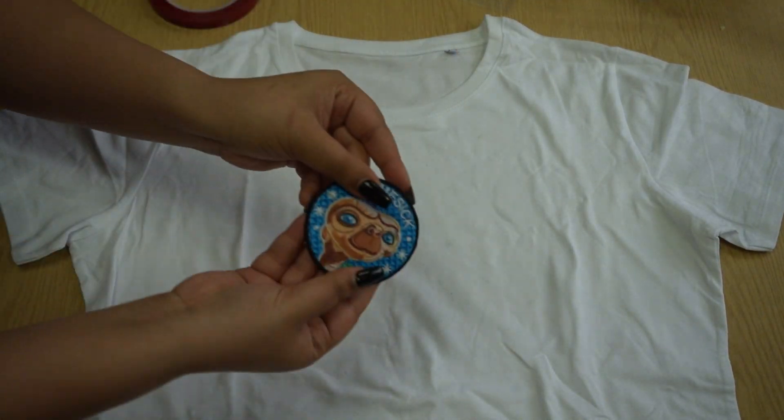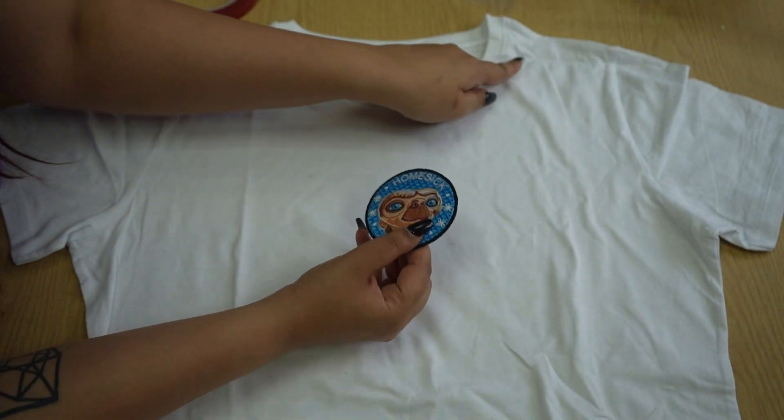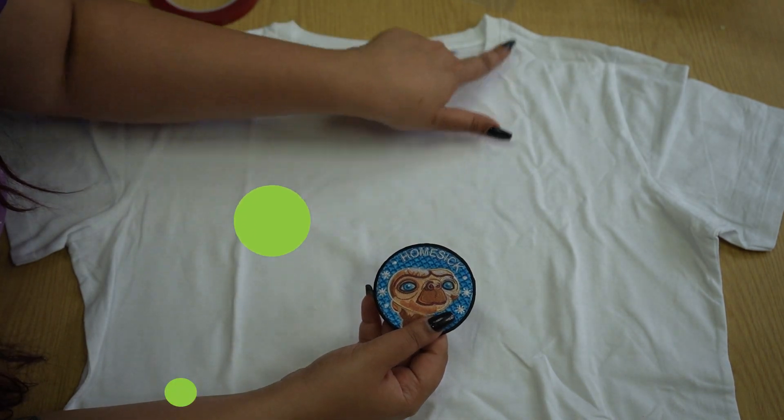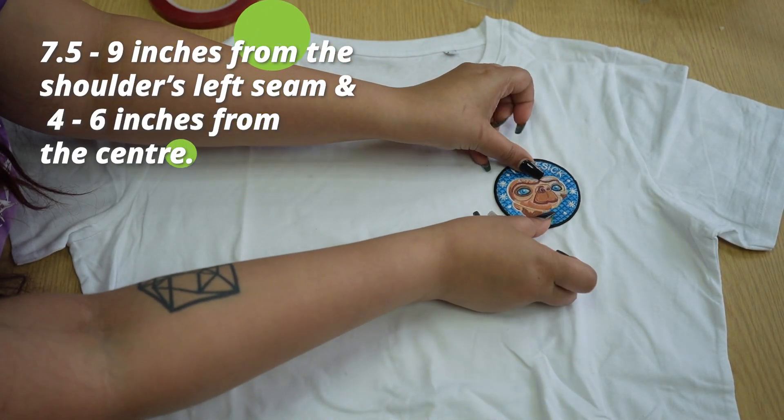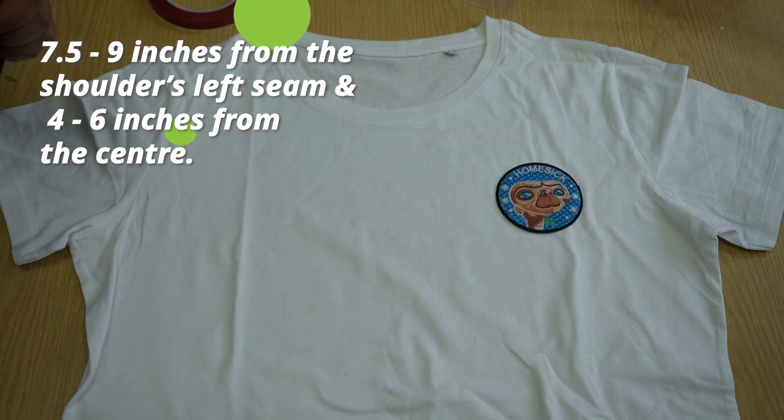I have my t-shirt laid out as flat and straight as possible. I will be placing the badge 7.5 to 9 inches from the shoulder's left seam and 4 to 6 inches from the center.